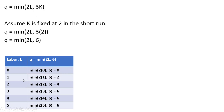If labor is 1, output is the minimum of 2 times 1 or 6 — output will be 2. If labor is 2, output is the minimum of 4 or 6, so 4 is the minimum. When labor is 3, output will be 6. When labor is 4, output is the minimum of 8 or 6 — in this case, it's 6.